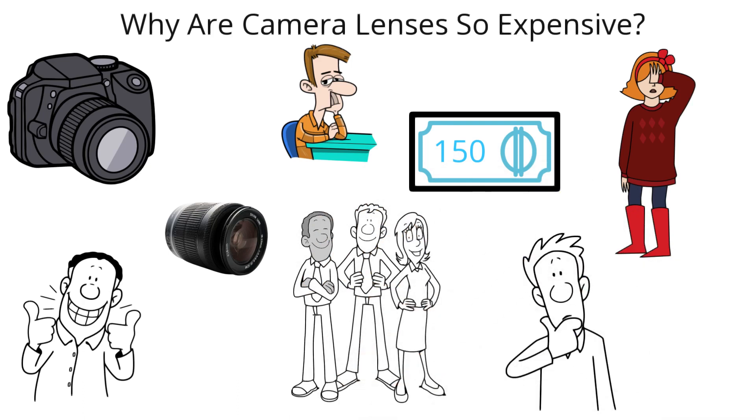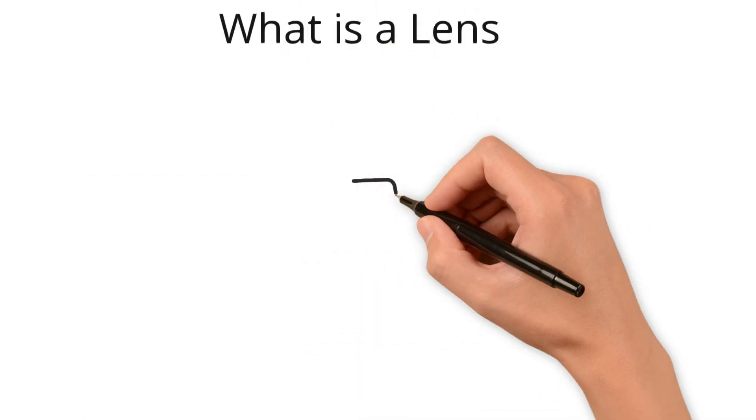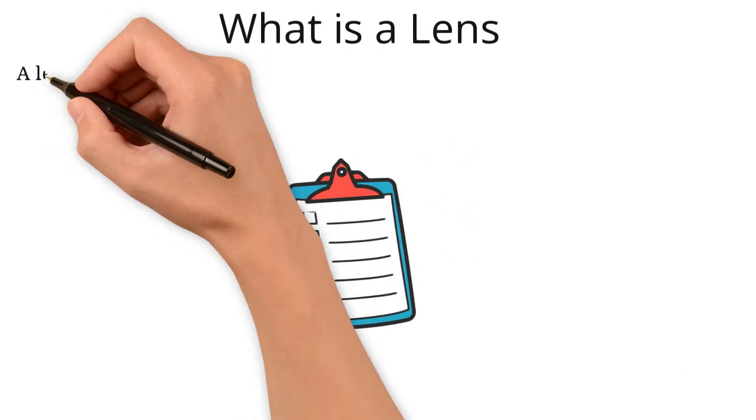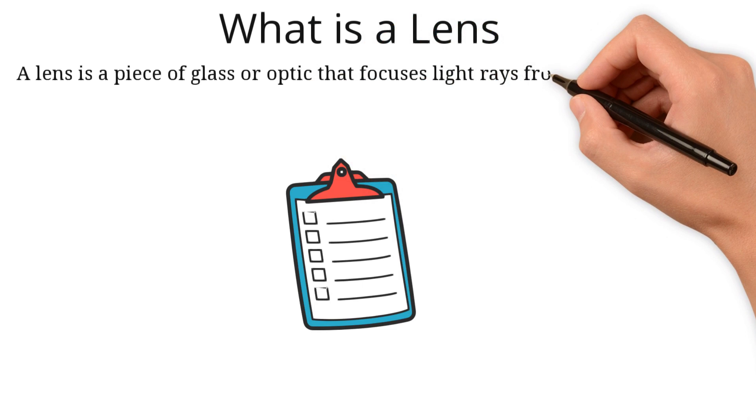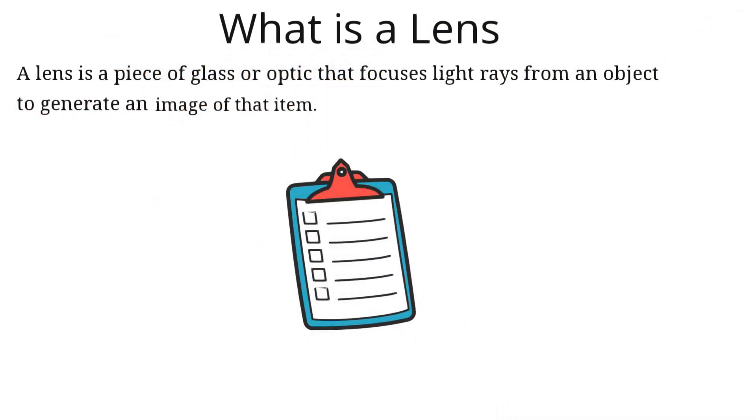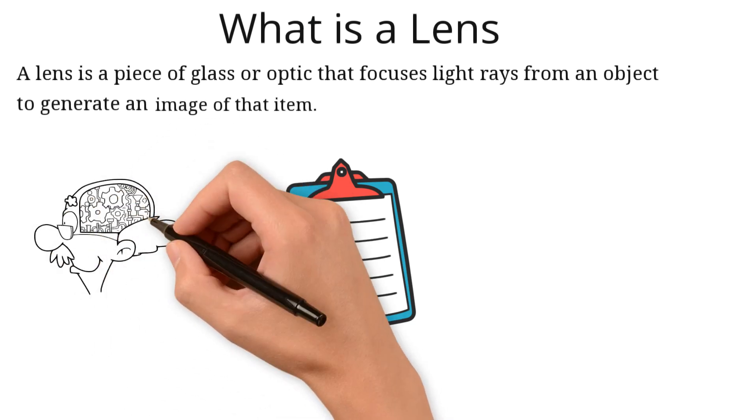What is a lens? Before we jump into the expensive price tag, let's figure out what a lens is. In short, a lens is a piece of glass or optic that focuses light rays from an object to generate an image of that item. I'm aware that it's a little difficult to understand, but the complex nature of the lens is a reason for the expensive price tag.